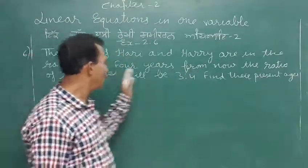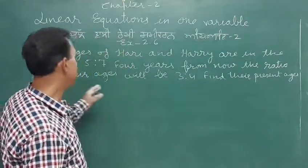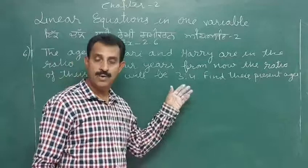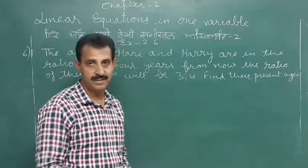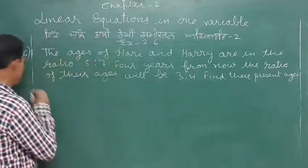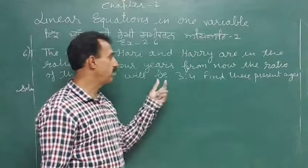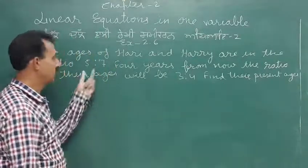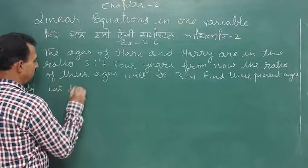Four years from now the ratio of their ages will be three is to four. Find their present ages. So solution: let the present ages be five x and seven x.